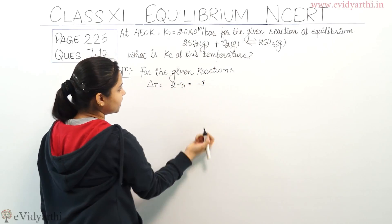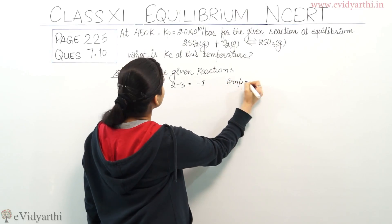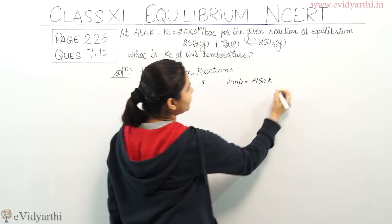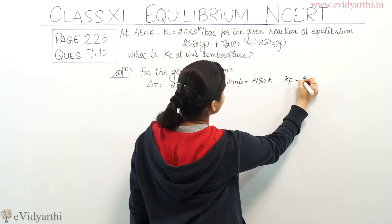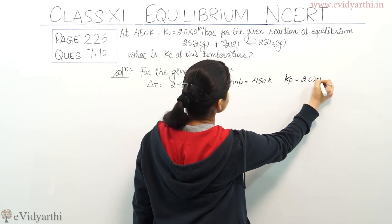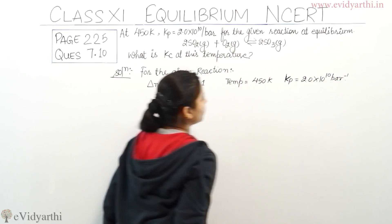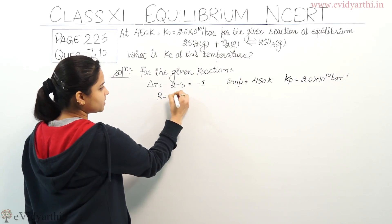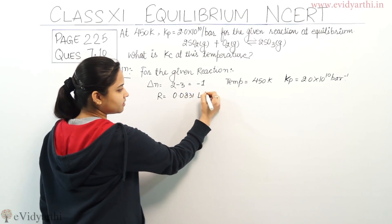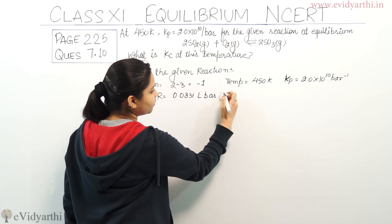The temperature which is given to us is 450 Kelvin. The value of Kp which is given to us is 2.0 × 10^10 bar^-1. And the value of gas constant we all know is 0.0831 liter bar mole^-1 Kelvin^-1.